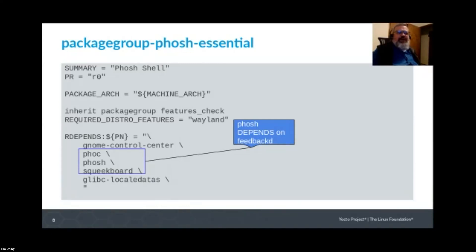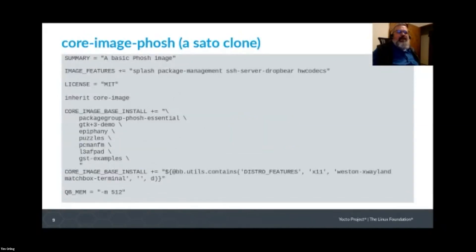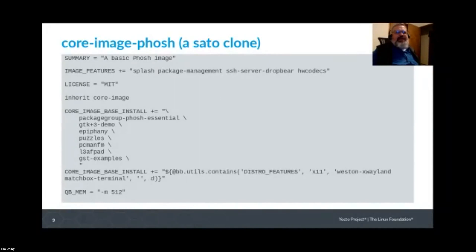The packagegroup-phosh-essential brings in GNOME Control Center, which we need for some of the feedback in the interface, plus Phosh and Phoc — Phosh actually depends on Phoc. Phoc depends on feedbackd as a built-in library, and we've added squeekboard for the on-screen keyboard. It also needs locale data from glibc, otherwise it has some funky behavior. Then we have core-image-phosh, which is an attempt at a Sato clone. Sato was created by OpenHand, the origin of the Poky and Yocto project.